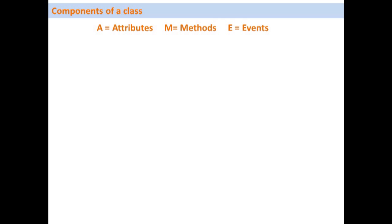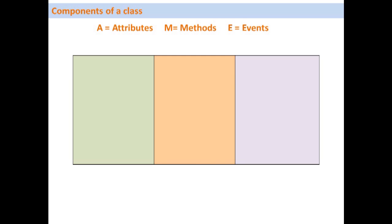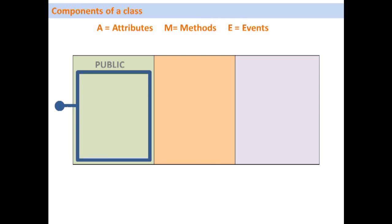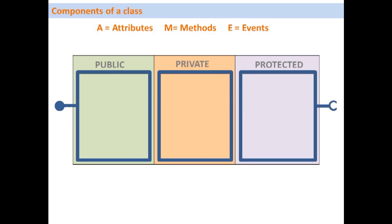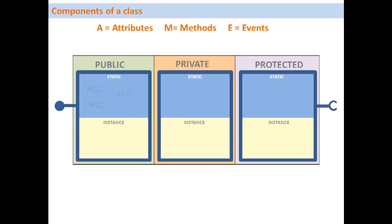Let's have a closer look at the components of a class. A class has attributes, methods, and events, and three different visibility sections: public, protected, and private. Within each visibility section, it's possible to have class components — such as attributes, methods, and events — as either static components or instance components.